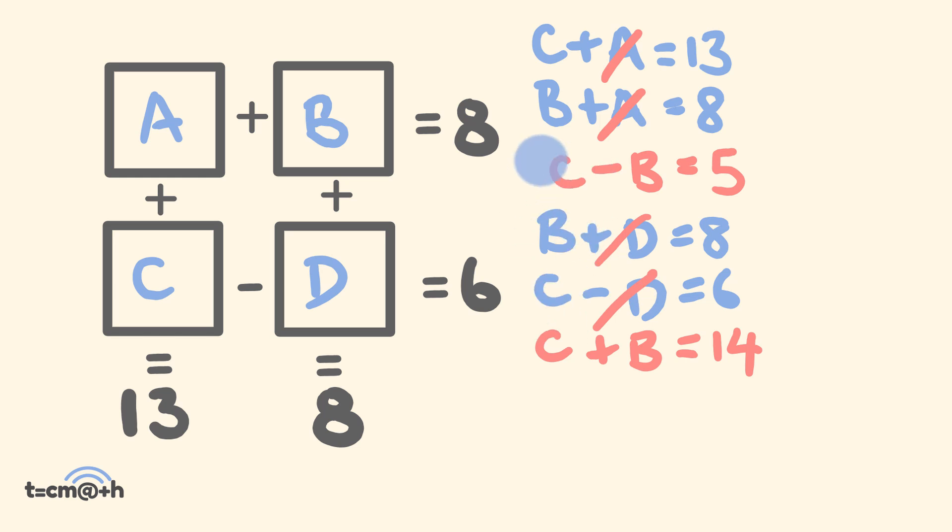Now we have two brand new equations relating to C and B. We can use, once again, simultaneous equations to solve these. So as you can see, negative B and positive B cancel each other out when we put these two equations together. C plus C is equal to 2C. This is equal to 14 plus 5, which is equal to 19. Therefore what do we have? Well if 2C is equal to 19, C is equal to half of that, which is 9.5.